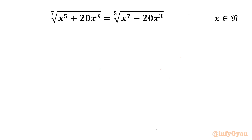Welcome back to Infigyan, my dear friends. In this video we are having one very interesting and challenging radical equation problem. It is the 7th root of x⁵ plus 20x³ equal to the 5th root of x⁷ minus 20x³. We have to find out all real solutions.